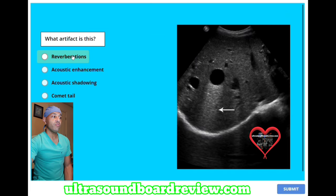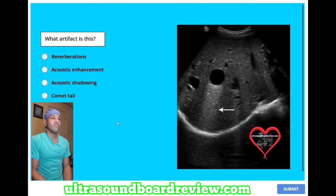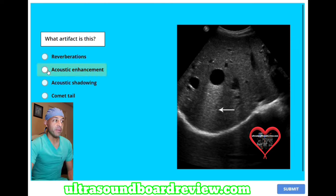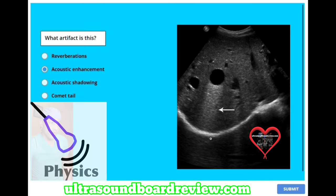What artifact is this? A, reverberations. B, acoustic enhancement. C, acoustic shadowing. Or D, comet tail. The answer is B, acoustic enhancement. There are a couple other artifacts to note here — this is a speed error artifact where it looks like the diaphragm is broken. This is enhancement here, and this is edge shadowing here — mostly around oblique structures you'll find these edge shadowing artifacts.